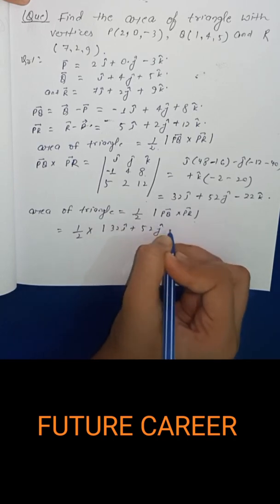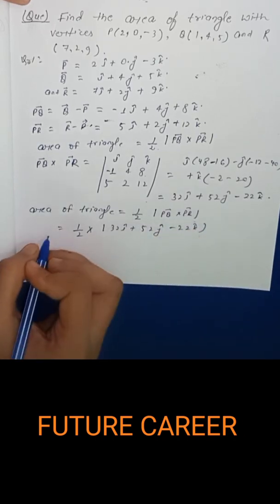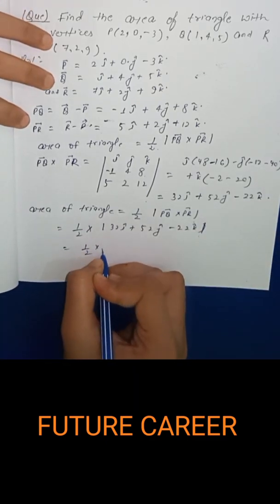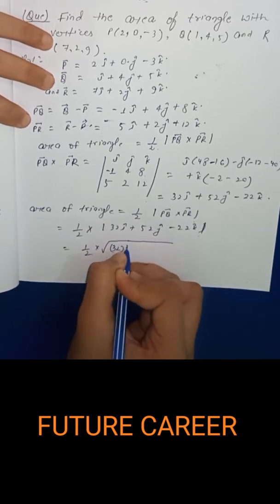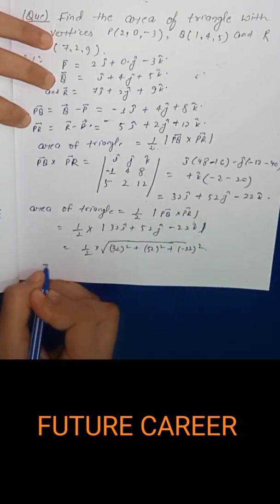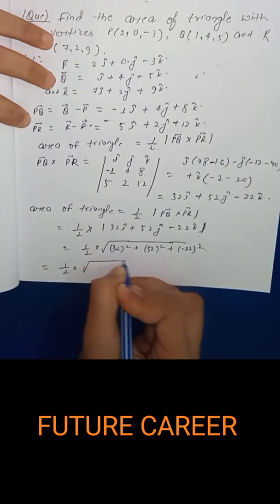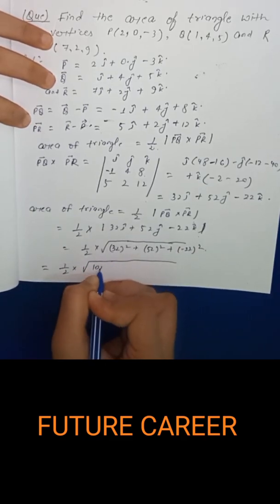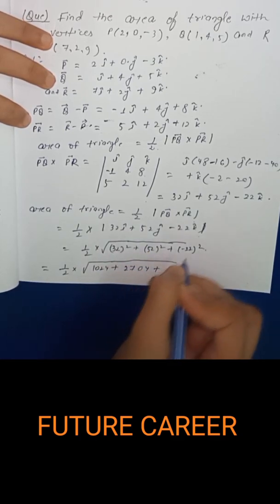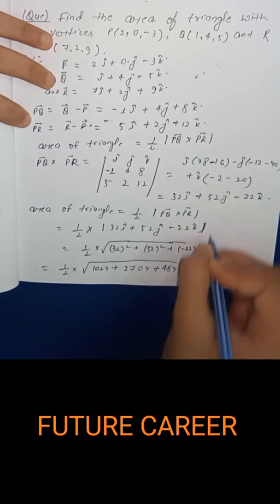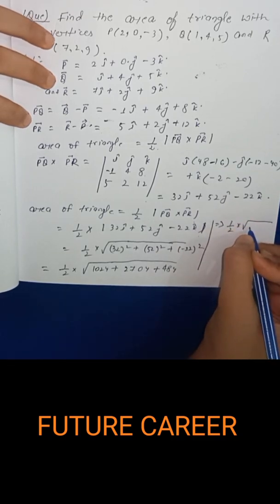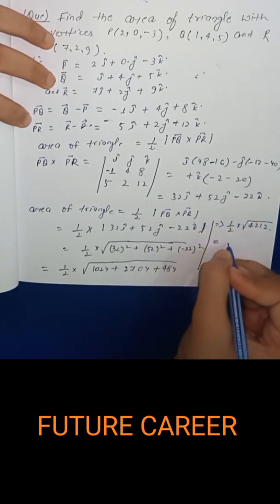32 square is 1024, plus 52 square equals to 2704, plus minus 22 square 484, which equals to 1 by 2 into under root 4212, equals to 1 by 2 into...